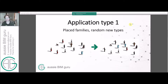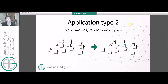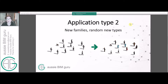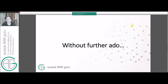The first application I'm going to show you is how to work with placed families of random types already and how to randomize them into new types. But a more relevant application is where you want to place people en masse without having to think about what type of family whilst you're placing it, and then use a cycler to randomly assign them after. So without further ado, we'll start the script itself.